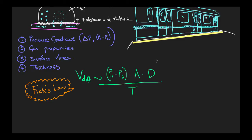Let's define the diffusion constant. The diffusion constant of a gas is proportional to its solubility in the fluid, and inversely related to the square root of its molecular weight. The bigger the molecule, the slower it diffuses; but the more soluble the molecule, the faster it diffuses. For example, carbon dioxide and oxygen have a similar molecular weight, but carbon dioxide is much more soluble in plasma than oxygen, so it diffuses much faster.